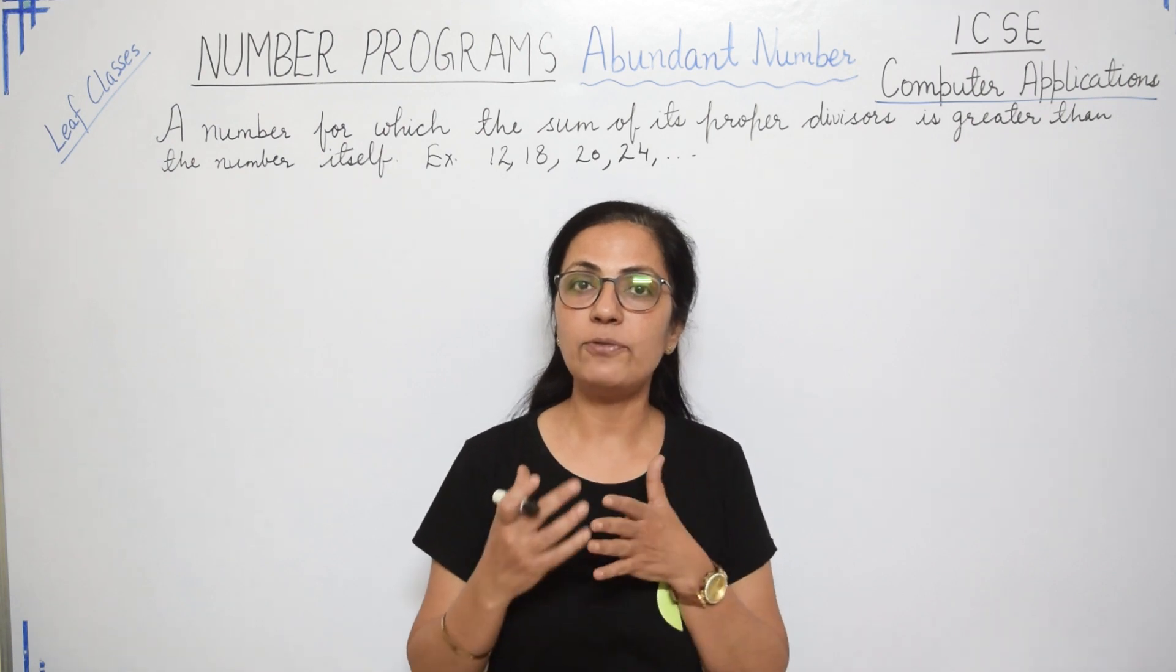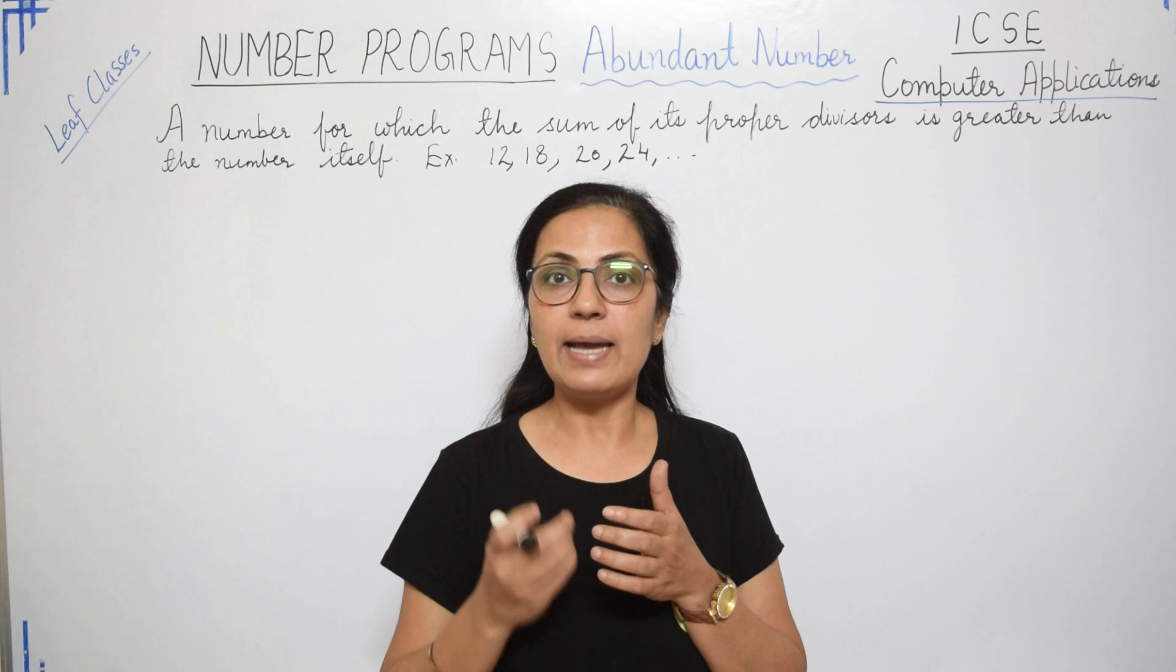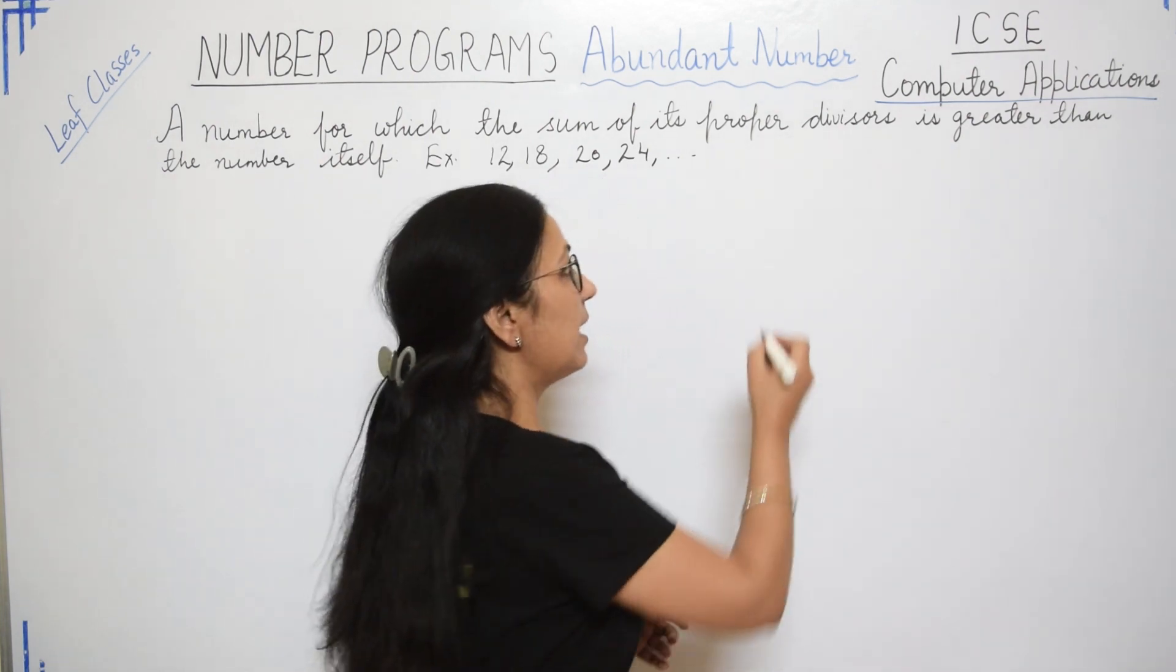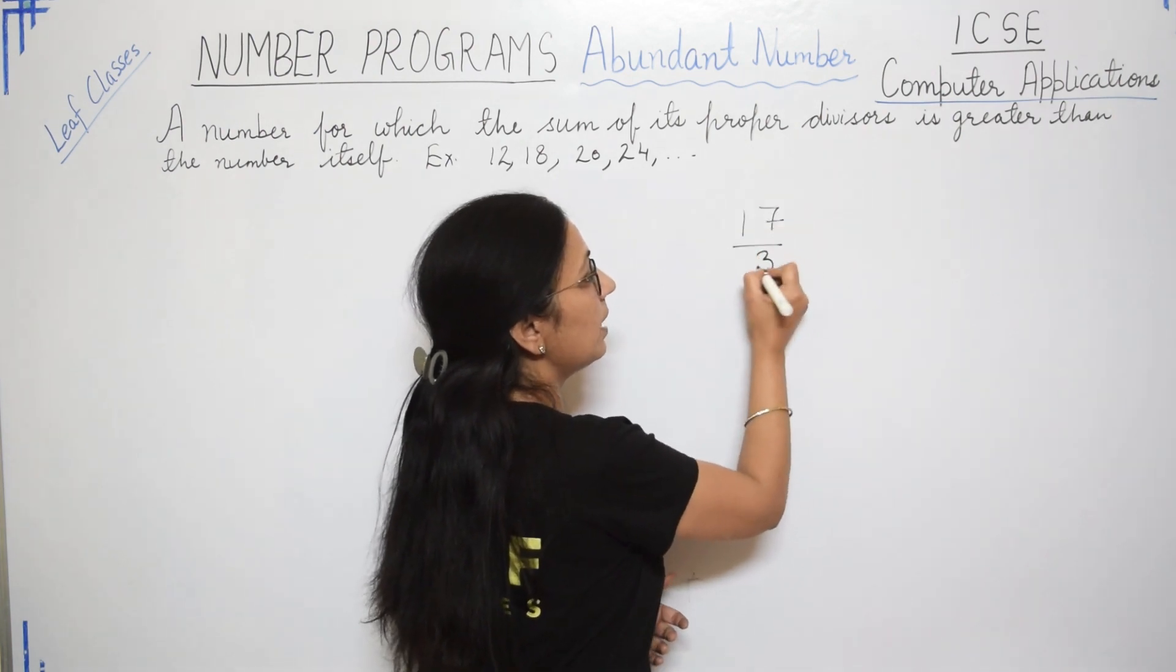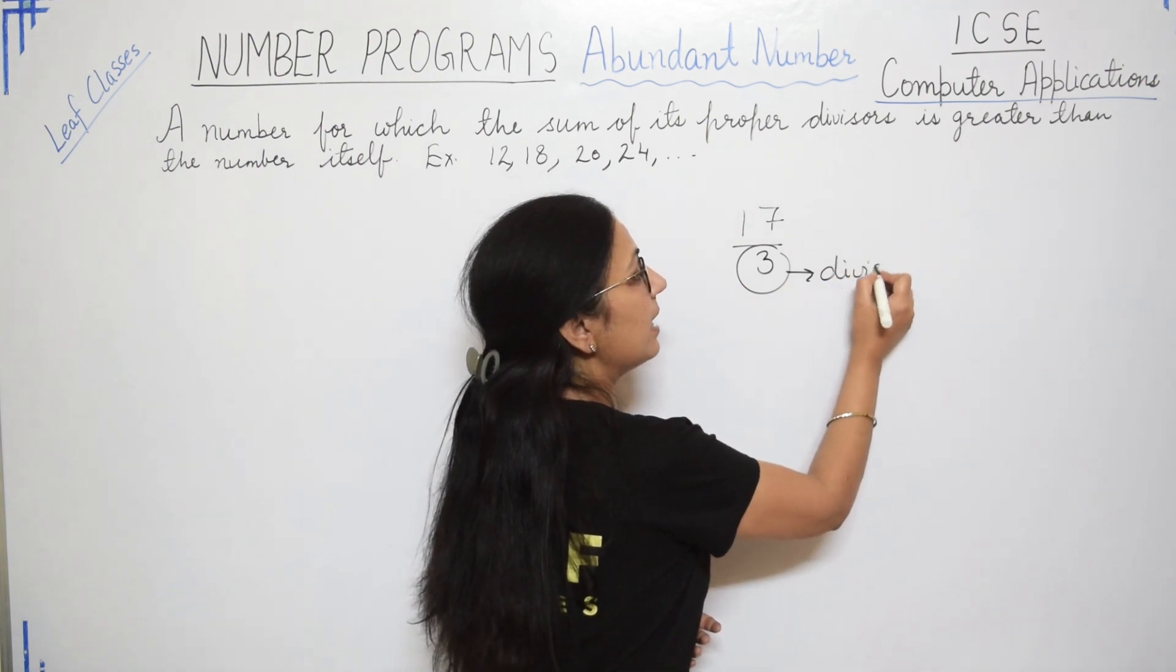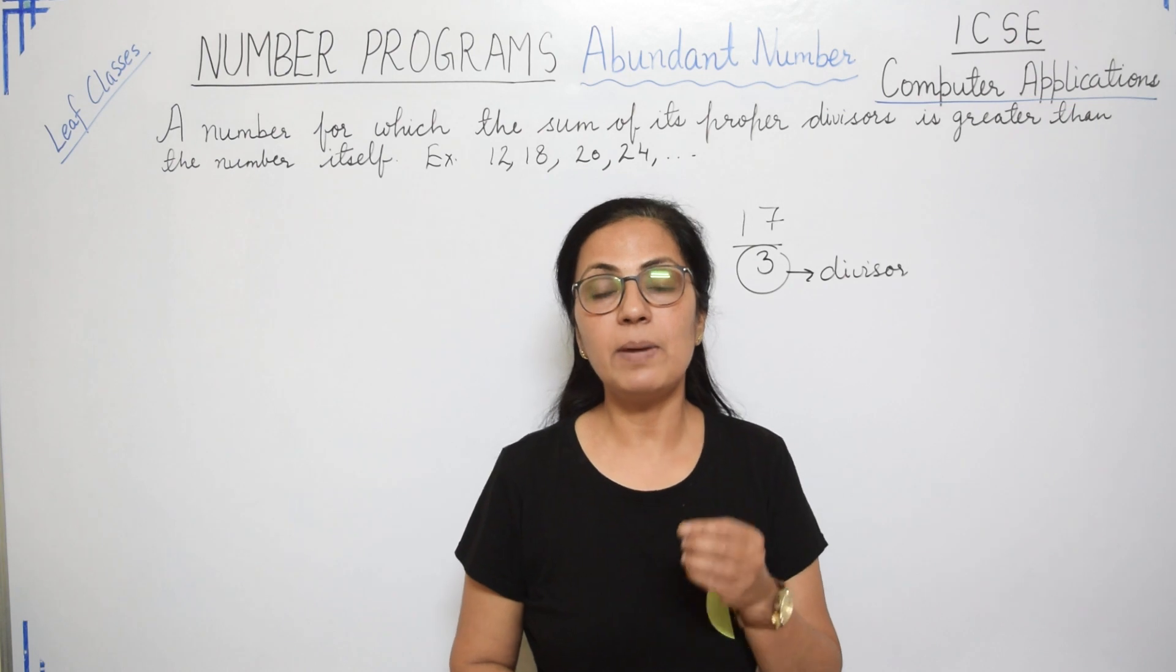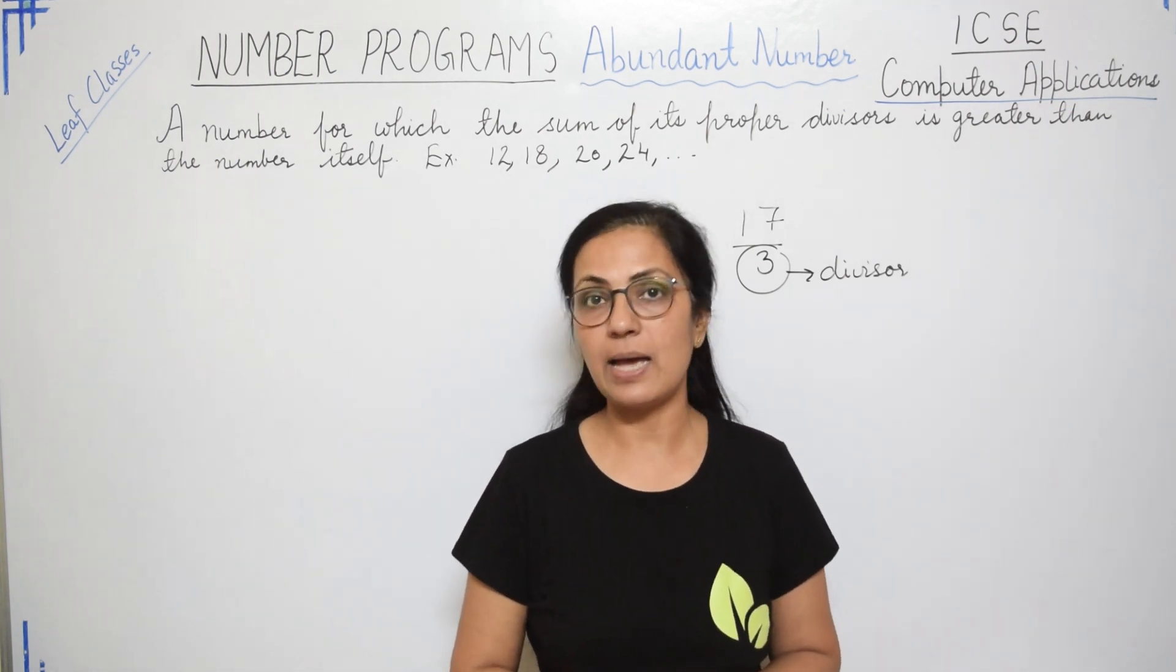Now for this, first we have to check the proper divisors. Now divisor is the number by which you divide any number. Say if I take a number 17 by 3, then 3 is our divisor. Right? And in proper divisor, you don't get any remainder. That means the remainder is 0, then that divisor is known as proper divisor.